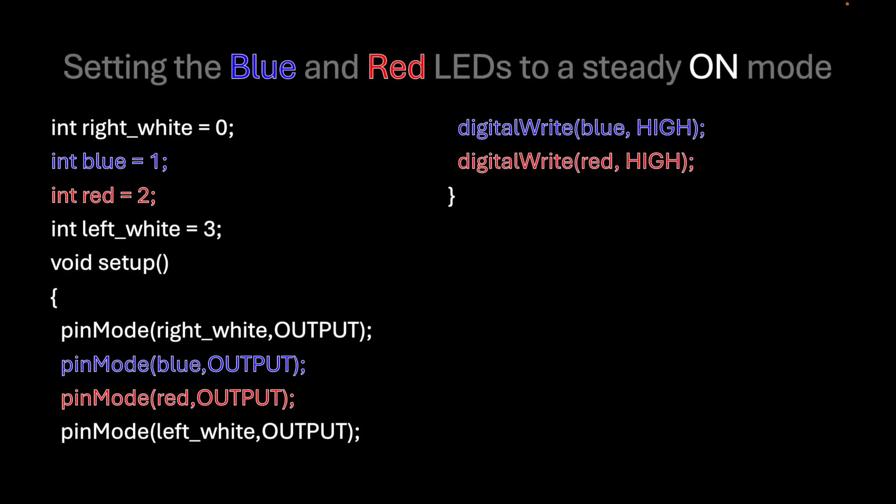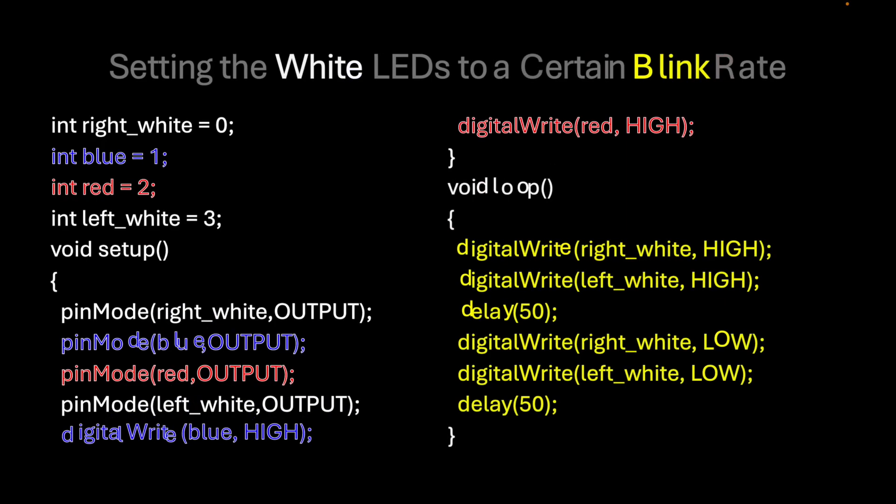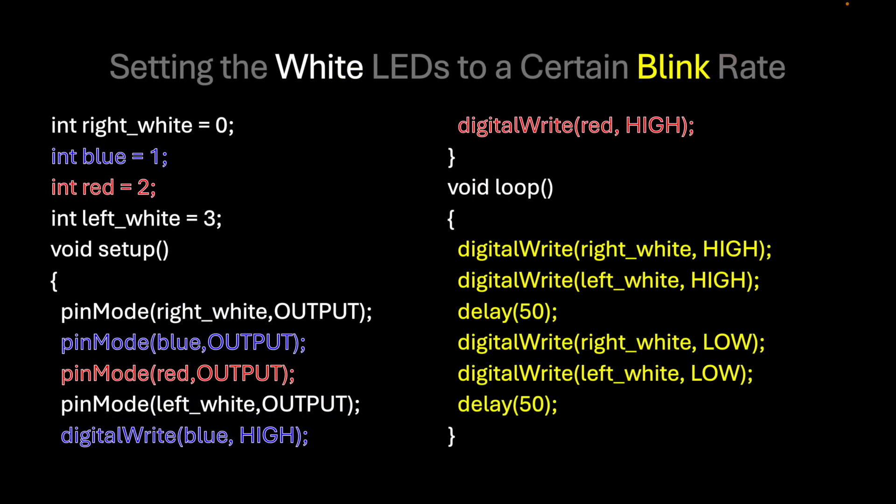For the blue and red lights, they will be assigned high all the time because they don't blink — they're just steady on lights. However, for the white lights, they will be assigned high and low from time to time with a delay of 50 milliseconds.